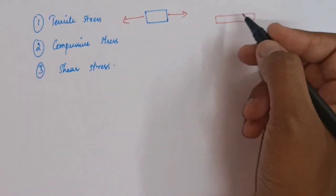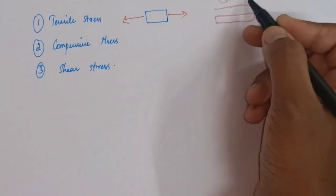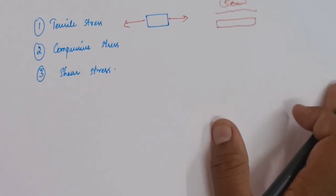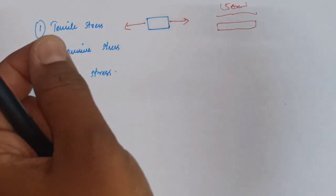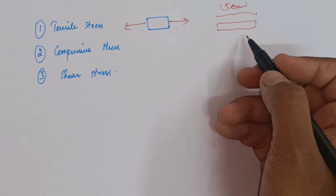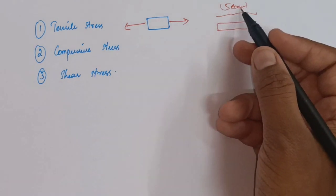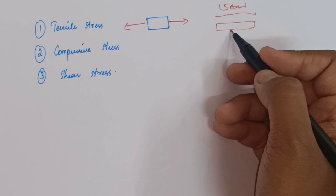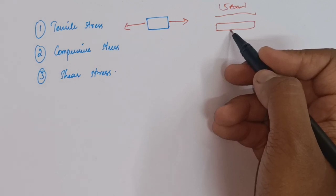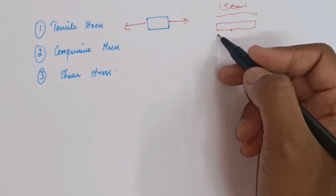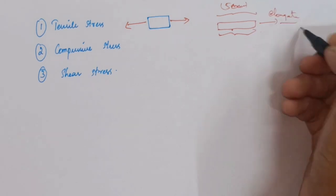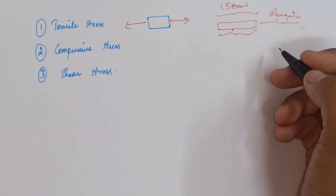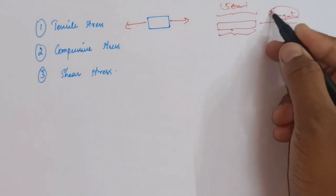For example, if you take an insulation tape of about five centimeters and pull on both sides — away from each other — to a certain extent the five-centimeter length will remain the same. That is because the internal force created inside the body is tensile stress. But once it goes beyond that level, there will be a change in length — it will elongate. This tensile stress results in the stretching or elongation of the body.